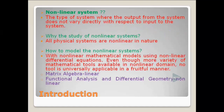The definition of a non-linear system: it is a type of system where the output does not vary directly with respect to the input — there is no direct linear relation. The question arises: why do we study non-linear systems? This is because all physical systems in the world are non-linear in nature, making it difficult to configure them using linear mathematics. So we use non-linear mathematics or non-linear modeling.